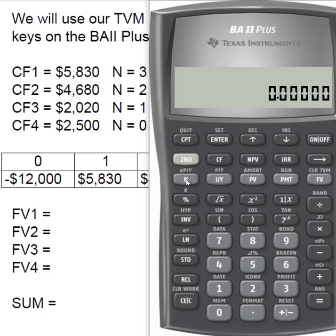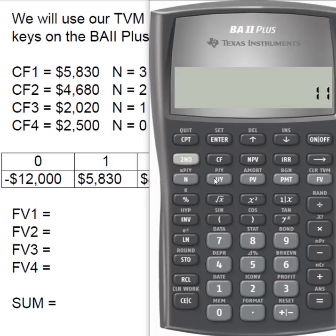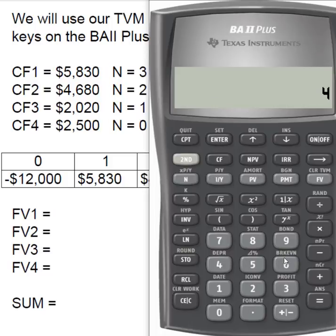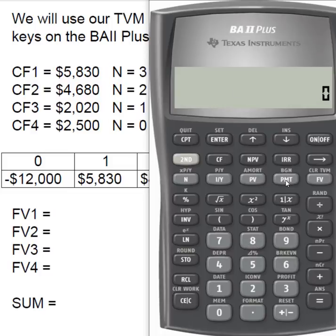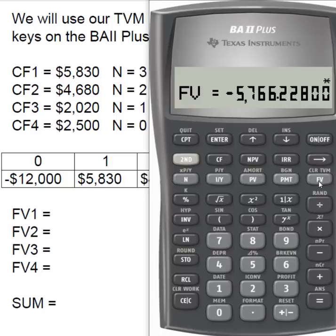For cash flow two, I have N equals two, IY equals 11, and present value of $4,680. With no payment, I compute the future value. Cash flow two gives me $5,766.23.